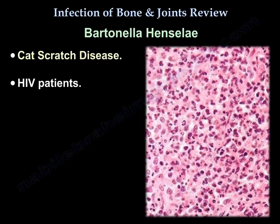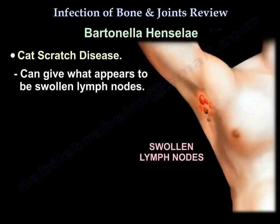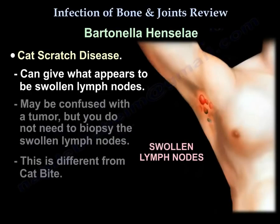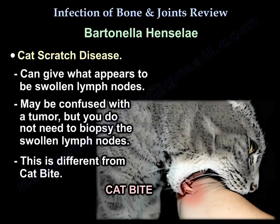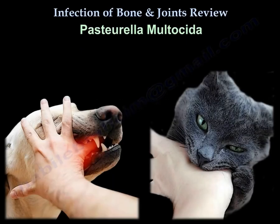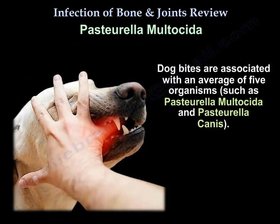Bartonella henselae can be seen in cat scratch disease and in HIV patients. Cat scratch disease can give what appear to be swollen lymph nodes — it may be confused with a tumor, but you don't need to biopsy it. That is different from a cat bite. Dog and cat bites involve Pasteurella multocida. The cat bite is deeper and sharper, causes deep injuries, and 50% of them will need surgery. The dog bite involves on average five organisms, one of which is Pasteurella multocida, another is Pasteurella canis.